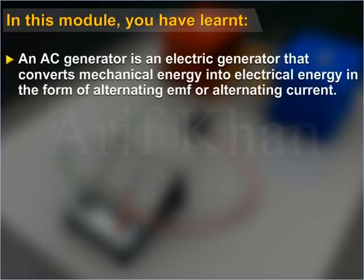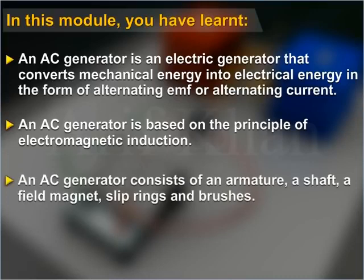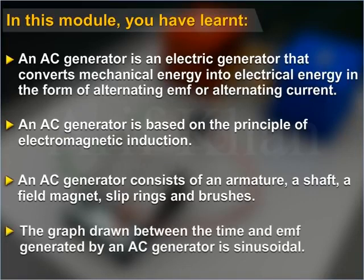In this module you have learned: an AC generator is an electric generator that converts mechanical energy into electrical energy in the form of alternating EMF or alternating current. An AC generator is based on the principle of electromagnetic induction. An AC generator consists of an armature, a shaft, a field magnet, and slip rings. The graph between time and EMF generated by an AC generator is sinusoidal.